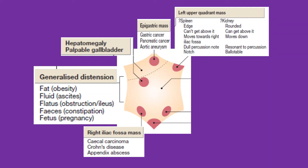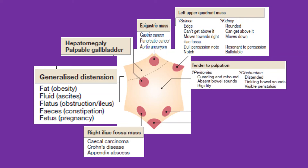For the kidney: it is rounded in shape, you can get above it between the mass and the rib cage, it moves downward on respiration, percussion over the lower rib cage area will be resonant, and it is a ballotable mass.